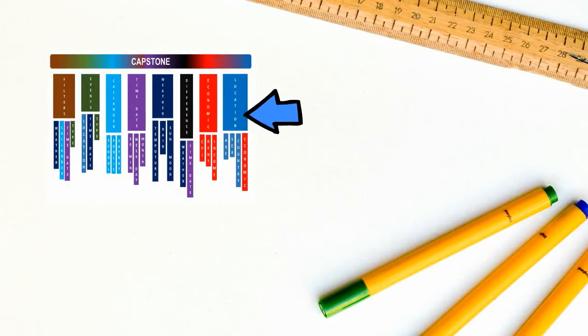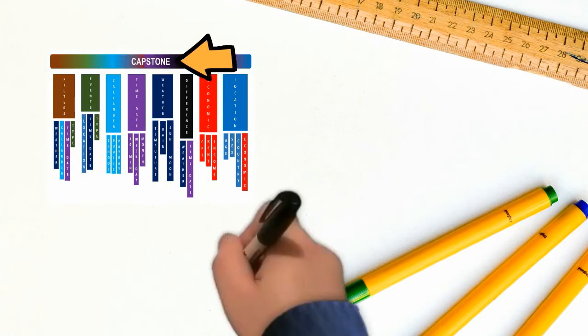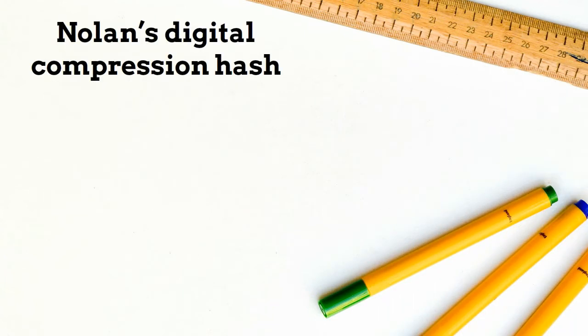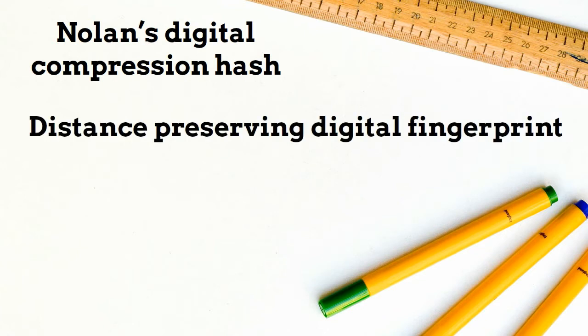So you can run the analysis to better understand any of the sub-structures or the total structure depending on your needs. It is designed to be totally flexible. Nolan's digital compression hash is a distance-preserving digital fingerprint.